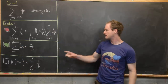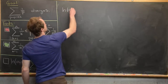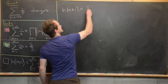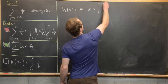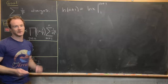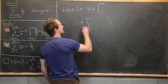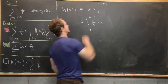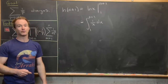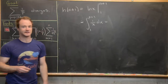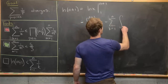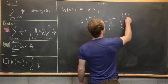For the third inequality, we start with ln(n+1), written as ln(x) evaluated from 1 to n+1 — since ln(1) = 0. By the Fundamental Theorem of Calculus, this equals the integral from 1 to n+1 of 1/x dx. We break this into pieces: the sum from k=1 to n of the integral from k to k+1 of 1/x dx.